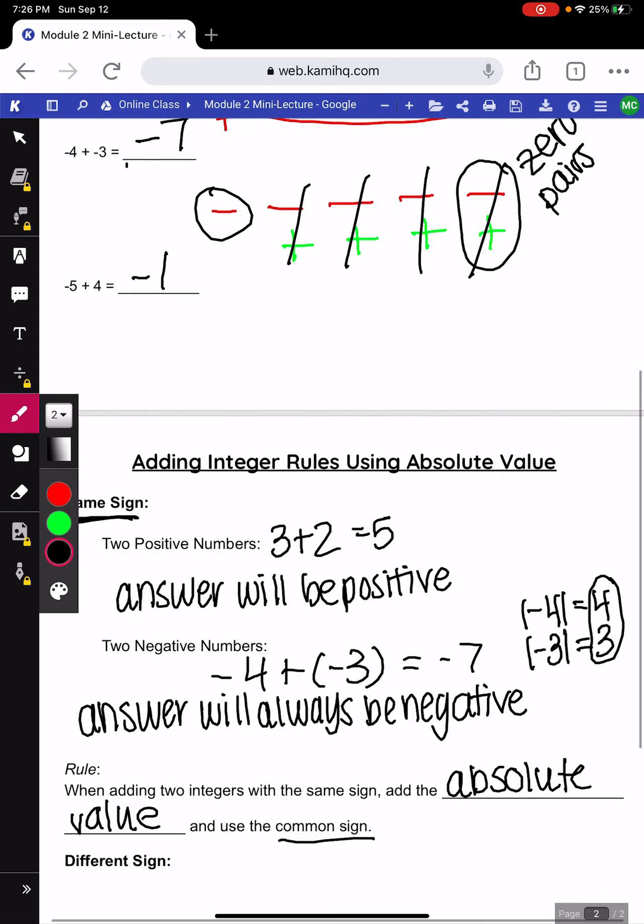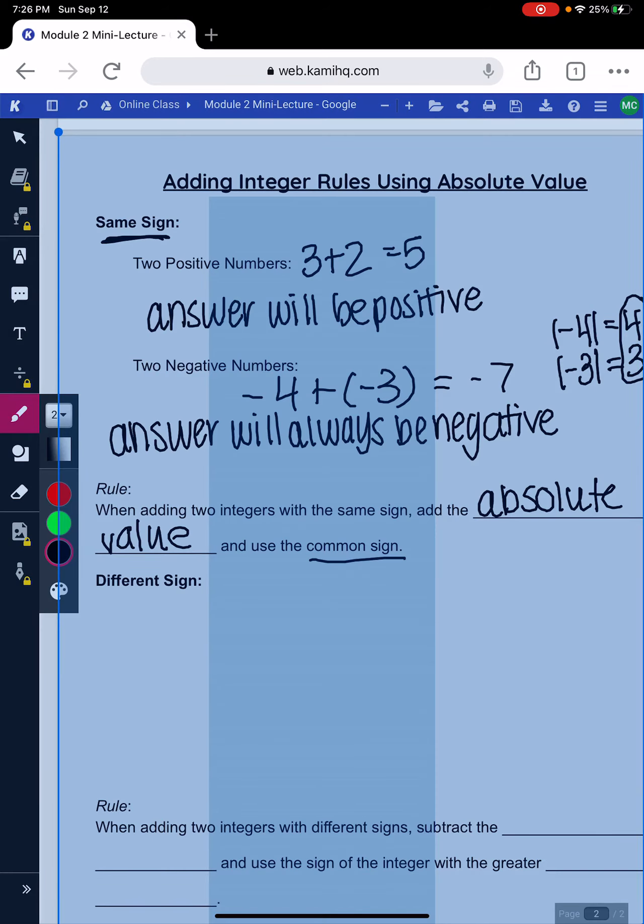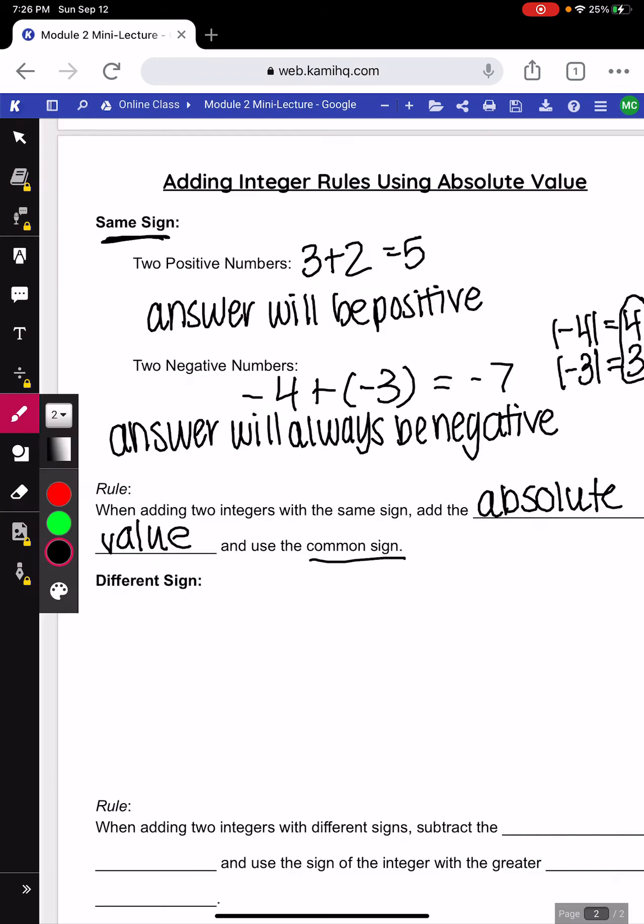All right, that was adding integers with the same sign. Now, let's look at adding integers with different signs. First off, we talked about last time our additive inverses or our opposites. So, if I'm adding, for example, negative 3 plus 3, if I'm adding additive inverses we talked about last time, that's always going to be 0.